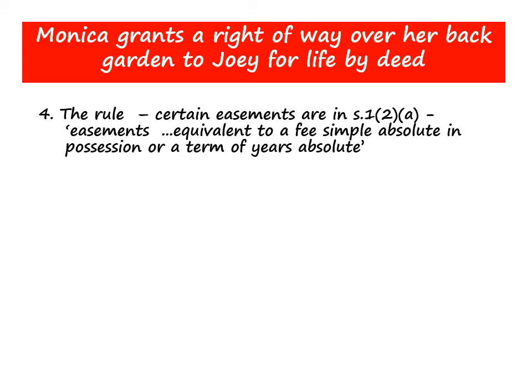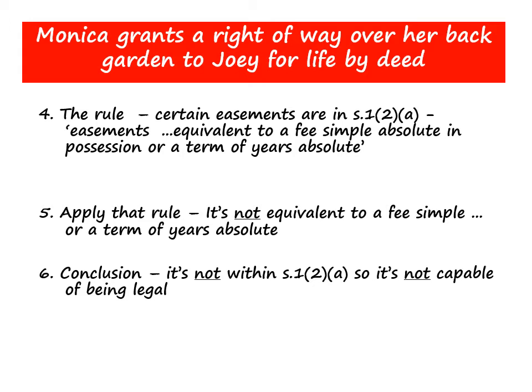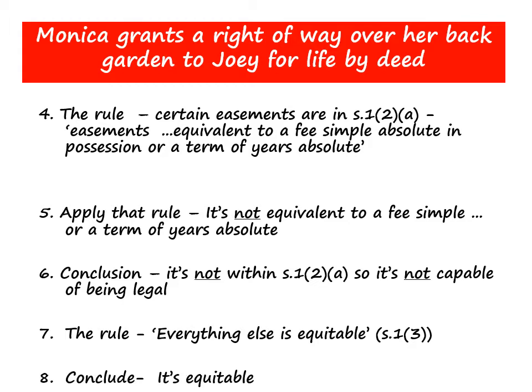If we apply that rule, this easement is not equivalent to a fee simple — in other words, it doesn't last forever. It only lasts for Joey's lifetime, and it's not for a term of years absolute, so it's not for a fixed period — we don't know how long Joey is going to live. Our conclusion is that it's not within section 1(2)(a), so it's not capable of being legal, because section 1(3) says everything else is equitable. So we conclude this easement is equitable.